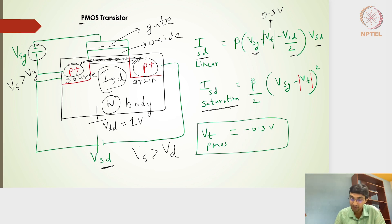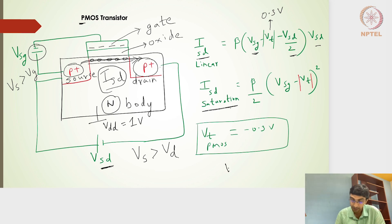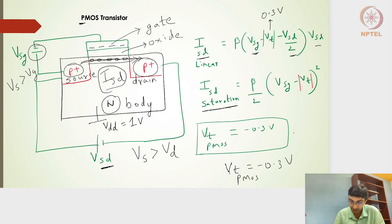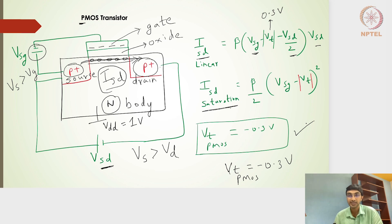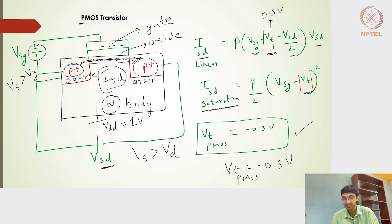VT is always defined with respect to the gate potential. For PMOS, the gate potential is negative, so VT for PMOS is defined as minus 0.3 volts. VT for NMOS is positive 0.3 volts. To get a positive current value, we take the magnitude of VT — this applies to both the linear and saturation current equations.